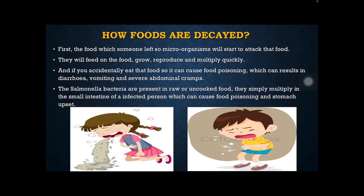Salmonella bacteria are present in uncooked food like meat. For example, if we cut meat with a knife and then eat the food while it's still uncooked, and an infected person has flu or fever, the Salmonella bacteria will multiply quickly in the small intestine of that infected person, causing stomach upset and food poisoning.